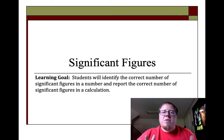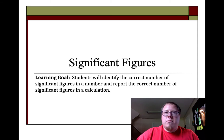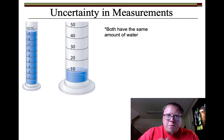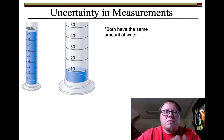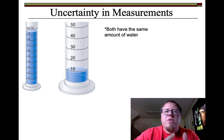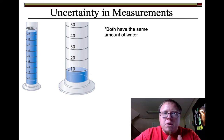Today I want to talk about something called significant figures. We've talked about uncertainty in measurements. I have a picture here of two graduated cylinders, and both of these graduated cylinders have the exact same amount of water in them.